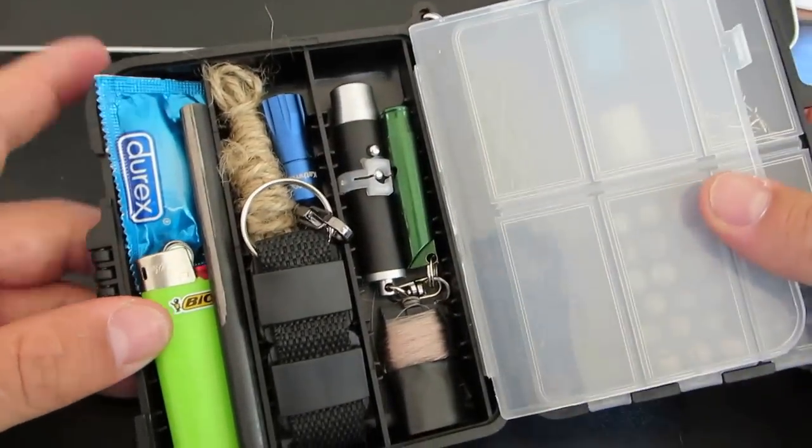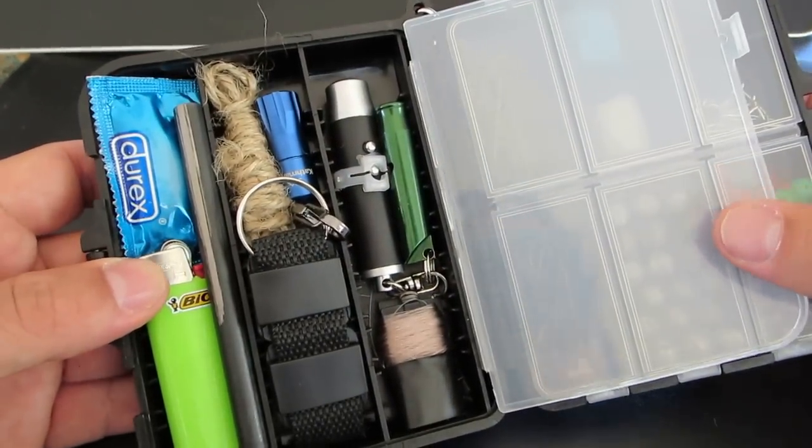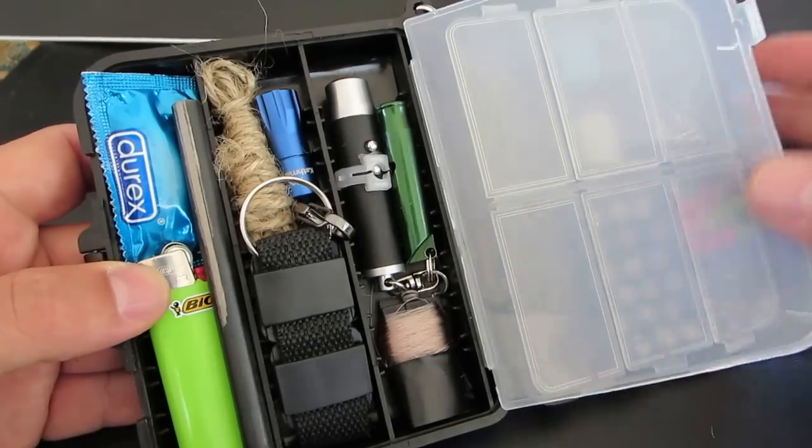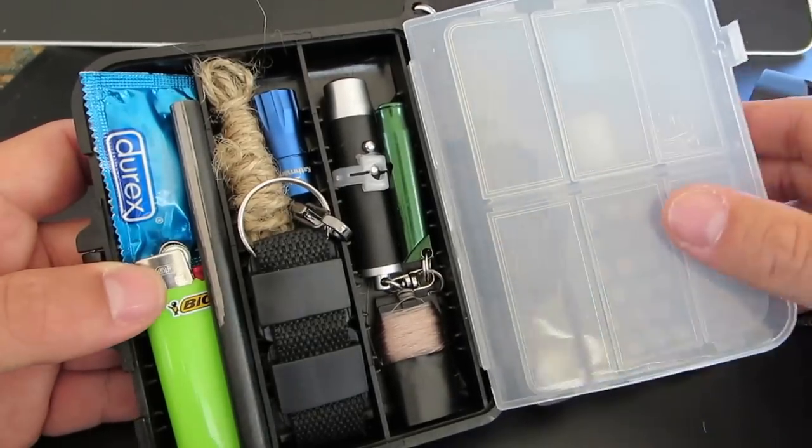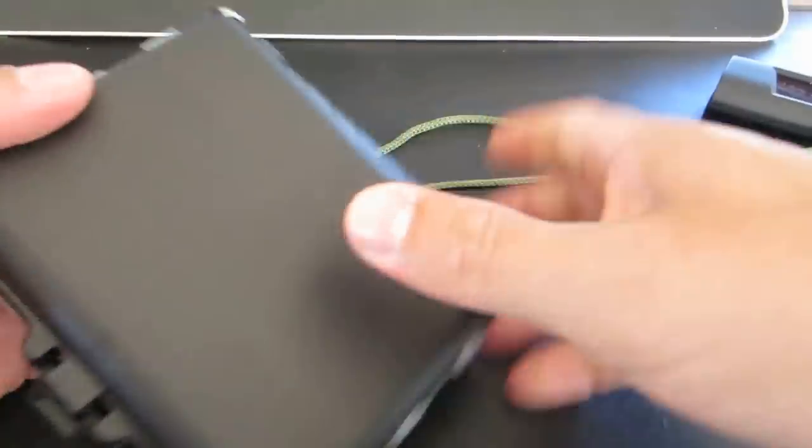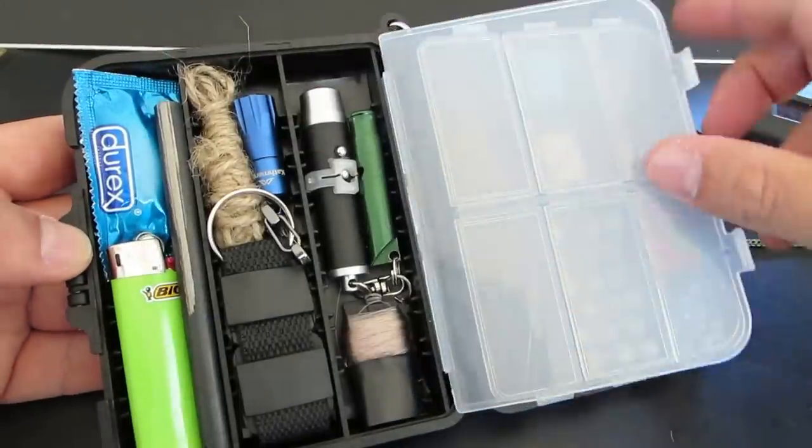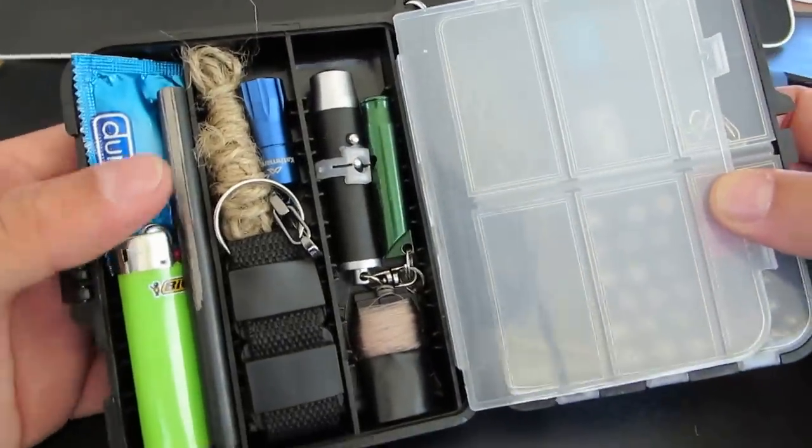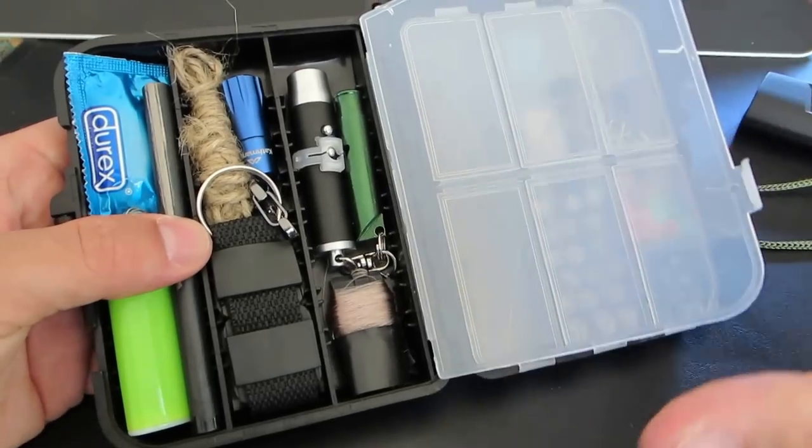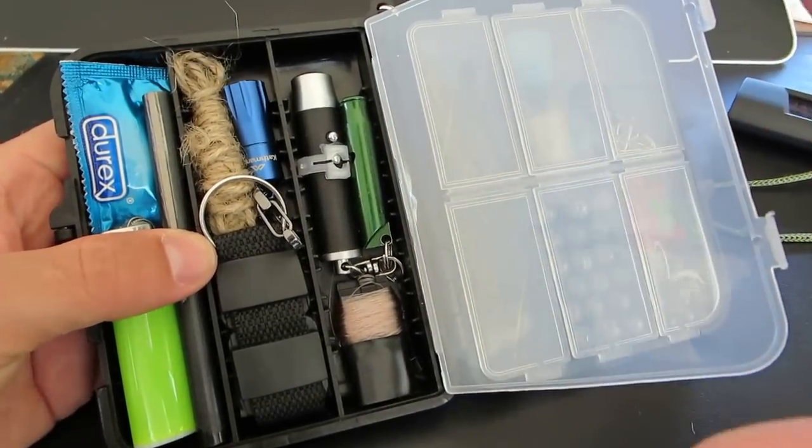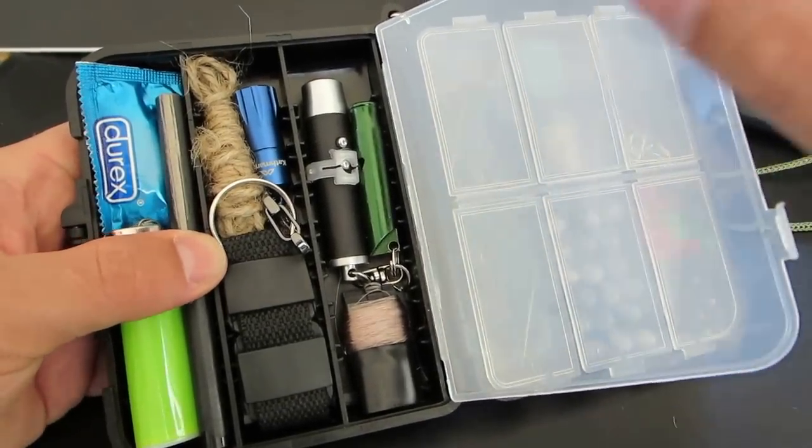What this kit doesn't come with is a knife. It's really expected that you would most likely carry this kit in your pocket like that, and you'd have your own belt clip knife or folding knife that you'd take along with that. And in that case, this becomes a more comprehensive survival slash fishing kit.